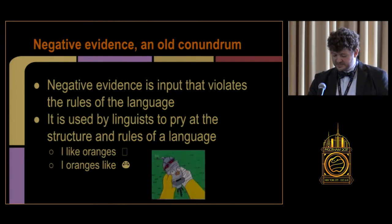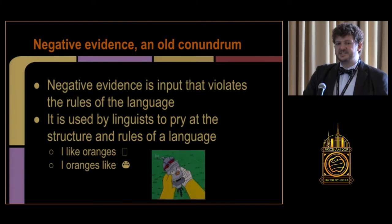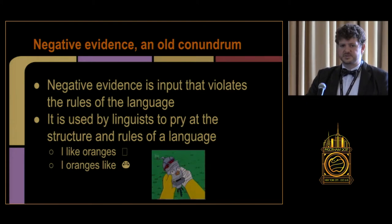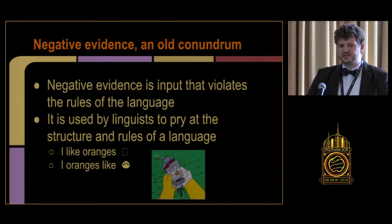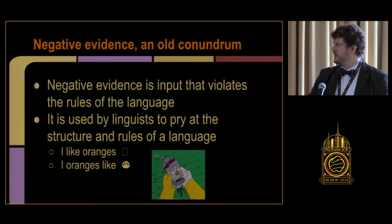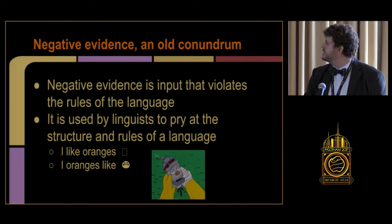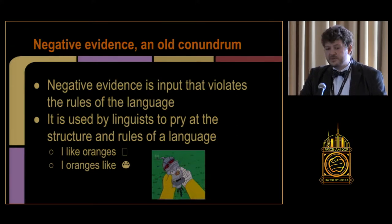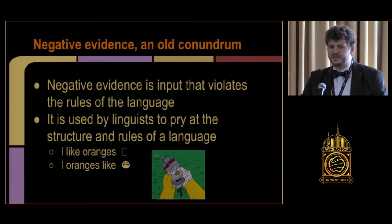This brings us to the idea of negative evidence. Negative evidence is input that violates the rules of a language — basically a bad sentence, like 'I orange is like.' Linguists very often use negative evidence to pry at which structures a language allows. A linguist observing the pair 'I like oranges' versus 'I oranges like' would conclude that in English, the verb has to be between the subject and the object — subject-object-verb order is not a sentence in English.